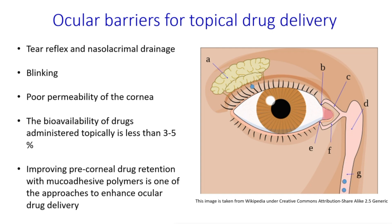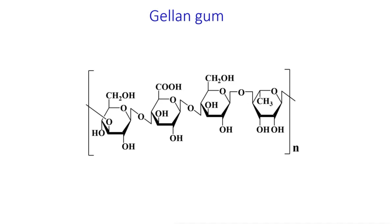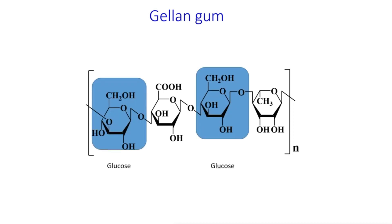One way to improve drug bioavailability is to increase the residence time through the use of mucoadhesive polymers. Gellan gum is a water-soluble anionic polysaccharide produced by the bacterium Sphingomonas elodea. It consists of two residues of D-glucose and one